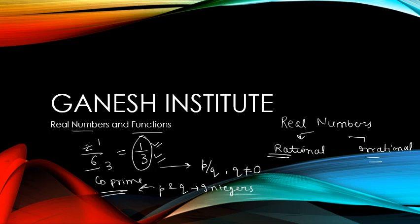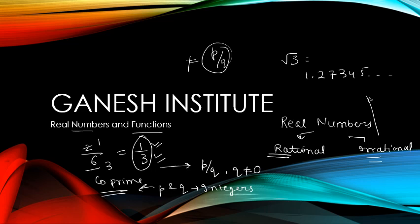When we say irrational, these numbers are not in the form of p/q. For example, root 3 equals 1.27345... and so on — there is nothing that repeats after some time. So these are non-terminating, non-repeating decimal expansions.